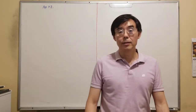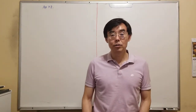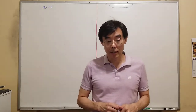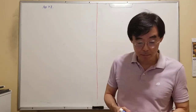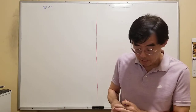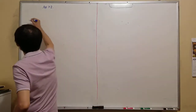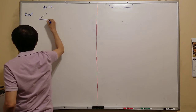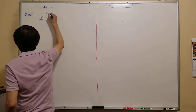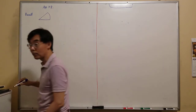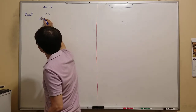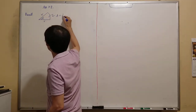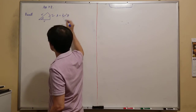Hello everyone, this is the video lecture of Section Appendix H2: Areas and Lengths in Polar Coordinates. Recall that the area formula of a sector — part of a circle — measured by angle theta and radius r is: area equals one half r squared theta.